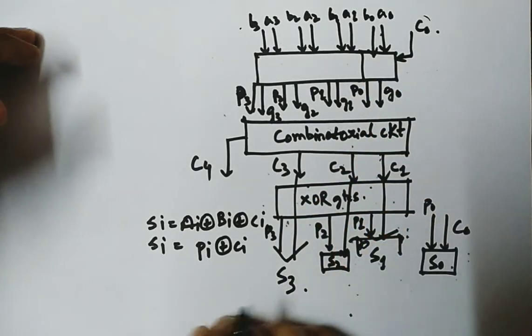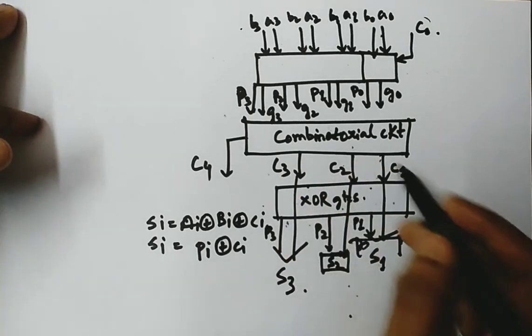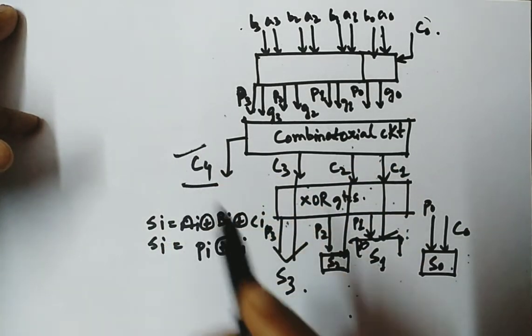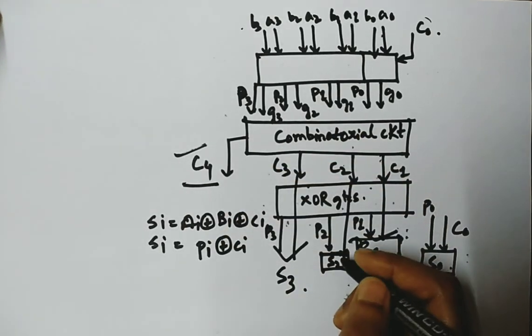So by a three-stage circuit we get S0, S1, S2, S3, and the final output carry we get from here. Now this circuit, this adder, is the fastest adder.